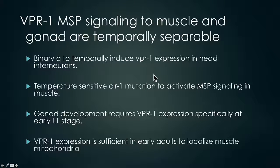Next, we wanted to know when VPR1 was needed. We used two strategies: Binary Q to temporally express VPR1 in head neurons, and the temperature-sensitive CLEAR1 allele to turn on and off the CLEAR1 receptor. We found that for normal gonad development to occur, VPR1 expression was needed specifically at the early L1 stage, and for normal muscle mitochondrial morphology, we needed VPR1 by the early adult stage.